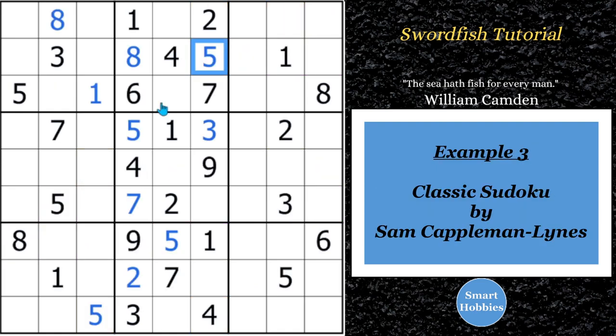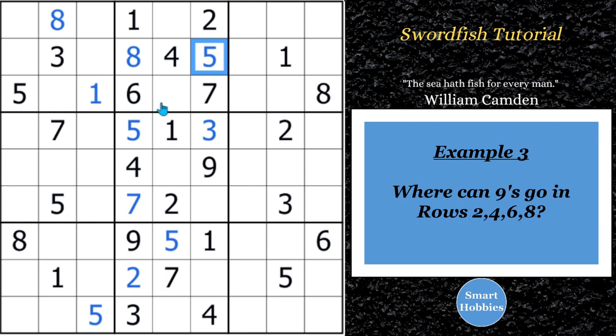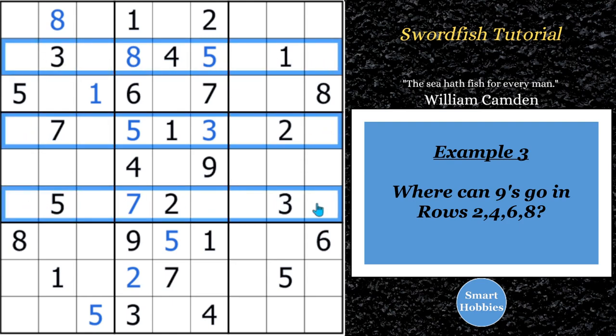For our third example, I have this classic Sudoku by Sam Cappleman-Lynes. I got the link below. Awesome video, awesome puzzle. You will definitely want to check this one out. Where can the candidate nines go in this puzzle? And in particular, you want to look across rows two, four, six, and eight. Okay, I'll give you a few seconds to kind of look at that.